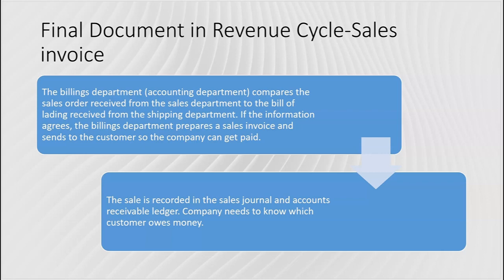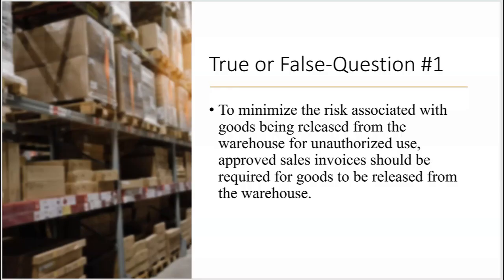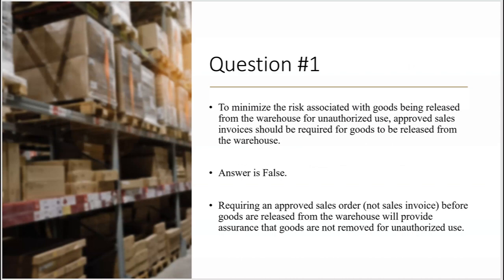That's a background review of the revenue cycle. Now let's look at risks, controls, and audit procedures in a true-or-false format so we can focus on one risk at a time. Number one: to minimize the risk associated with goods being released from the warehouse for unauthorized use, approved sales invoices should be required for goods to be released from the warehouse — true or false? The answer is false.